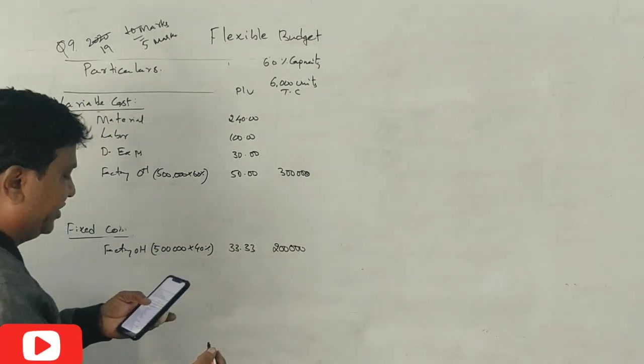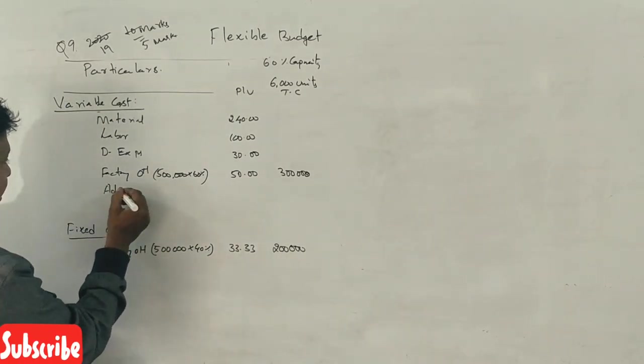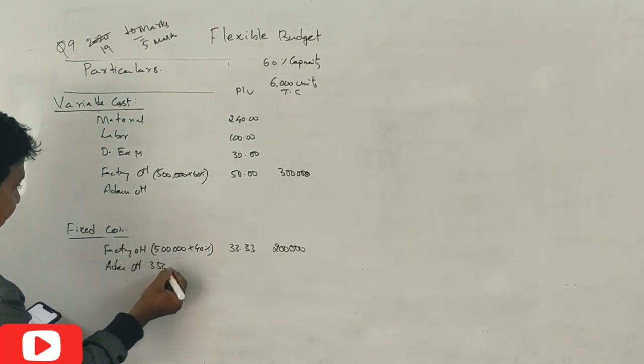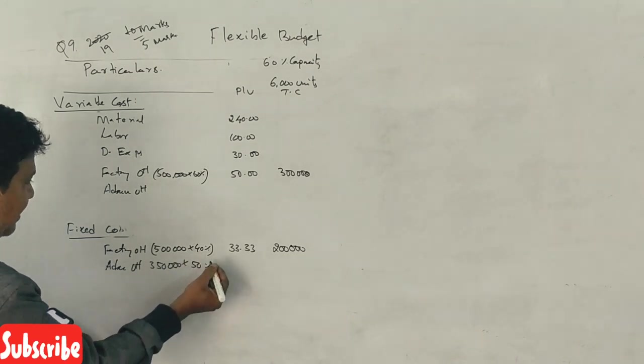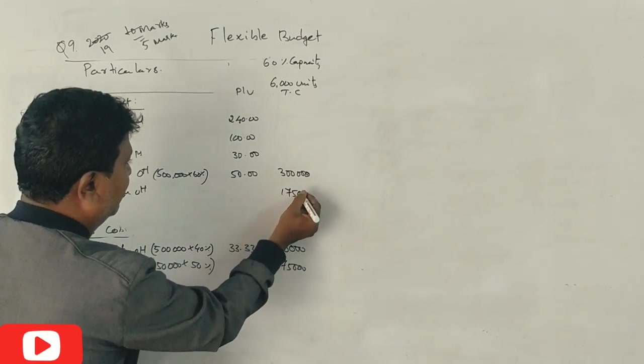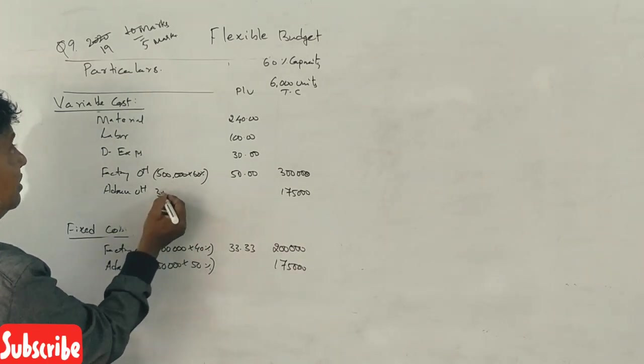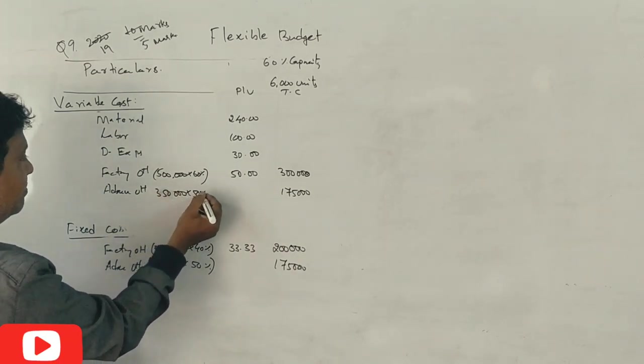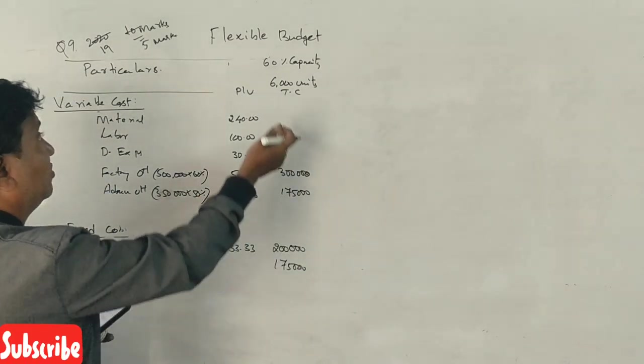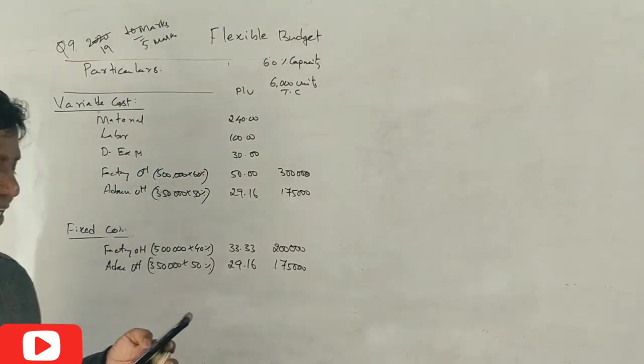Administration expenses 3 lakhs 50 thousand, 50 percent fixed. That's 1 lakh 75 thousand fixed and 1 lakh 75 thousand variable. 1 lakh 75 thousand divided by 6,000 units gives 29.16 per unit.